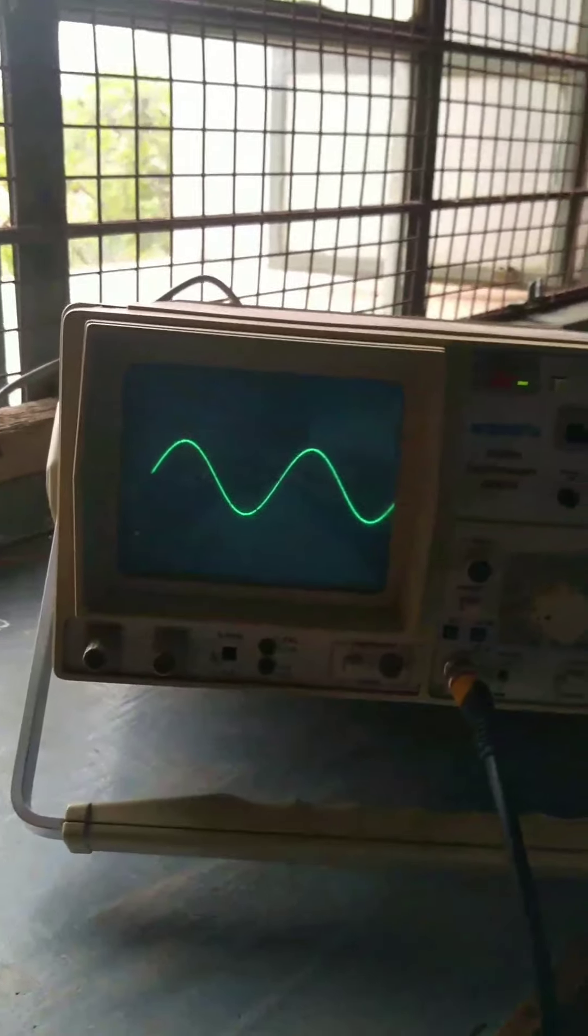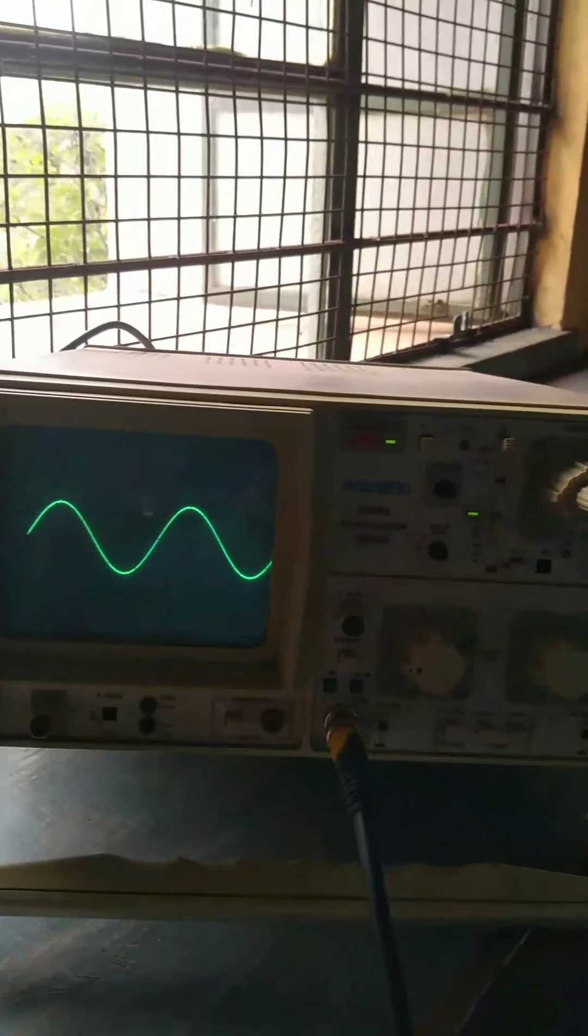The input from the XR2206 is the input from the FM circuit. The CR determines the frequency. The time period can be measured.